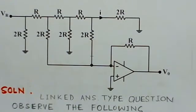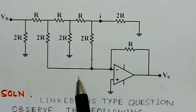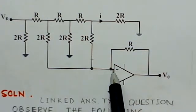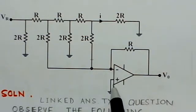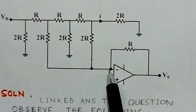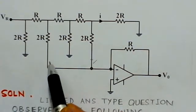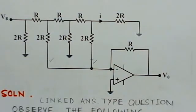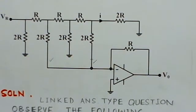In this circuit, the negative input is the inverting input of the operational amplifier, and the non-inverting input is connected to ground. Therefore, the inverting input will also be at virtual ground. Once it is at ground potential, these terminals would also be at ground potential, which greatly simplifies the network.